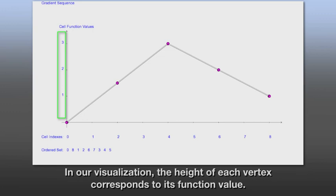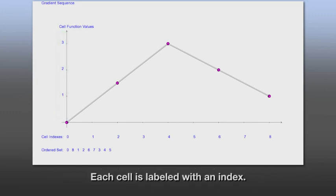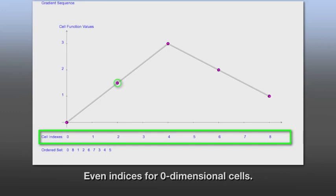In our visualization, the height of each vertex corresponds to its function value. Each cell is labeled with an index, even indices for zero-dimensional cells, and odd indices for one-dimensional cells.